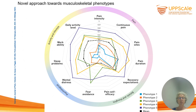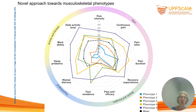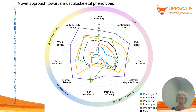You can also depict these different phenotypes in a spiderweb diagram, as you can see here. The different colors represent the different phenotypes, with blue being the least affected group of patients, followed by orange, green, yellow, and the purple line being the most severely afflicted group. This is shown across pain intensity, continuous pain, pain sites, pain duration, recovery expectations, pain self-efficacy, fear avoidance, mental distress, sleep problems, workability, and daily activity level. You can see, for instance, that phenotype 3 has a high burden on fear avoidance, which gives us an excellent starting point to begin therapy.